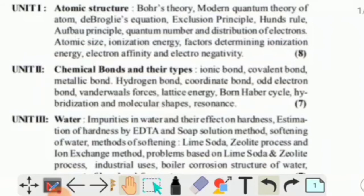The second unit is Chemical Bonds and their types: ionic bond, covalent bond, metallic bond, hydrogen bond, coordination bond, odd electron bond, Van der Waals forces, lattice energy, Born-Haber cycle, hybridization and molecular shapes, and resonance.